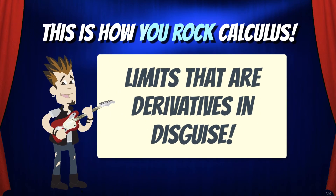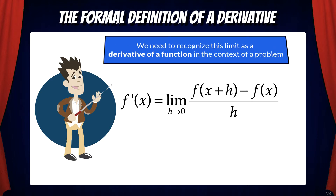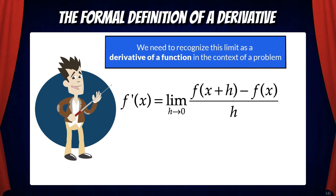Hey everybody, in this video we're going to be looking at limits that are derivatives in disguise. In a previous video we learned that the formal definition of a derivative says f prime of x equals the limit as h goes to zero of f of x plus h minus f of x over h. This is a limit that we need to learn to recognize as a derivative in the context of a problem.